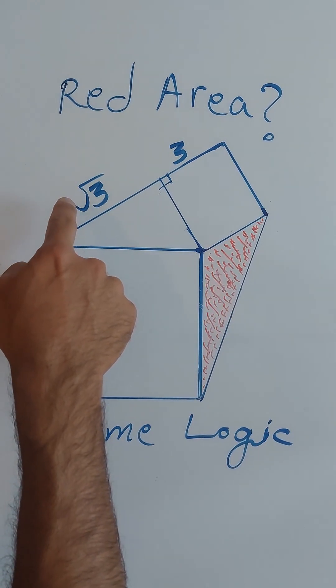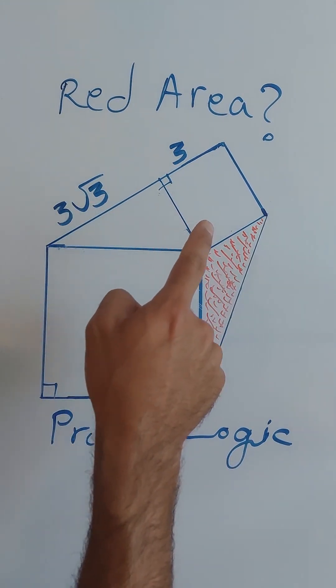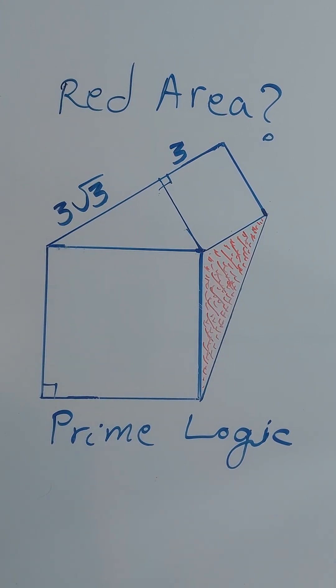The side of this triangle is three square root of three and the side of this square is three.